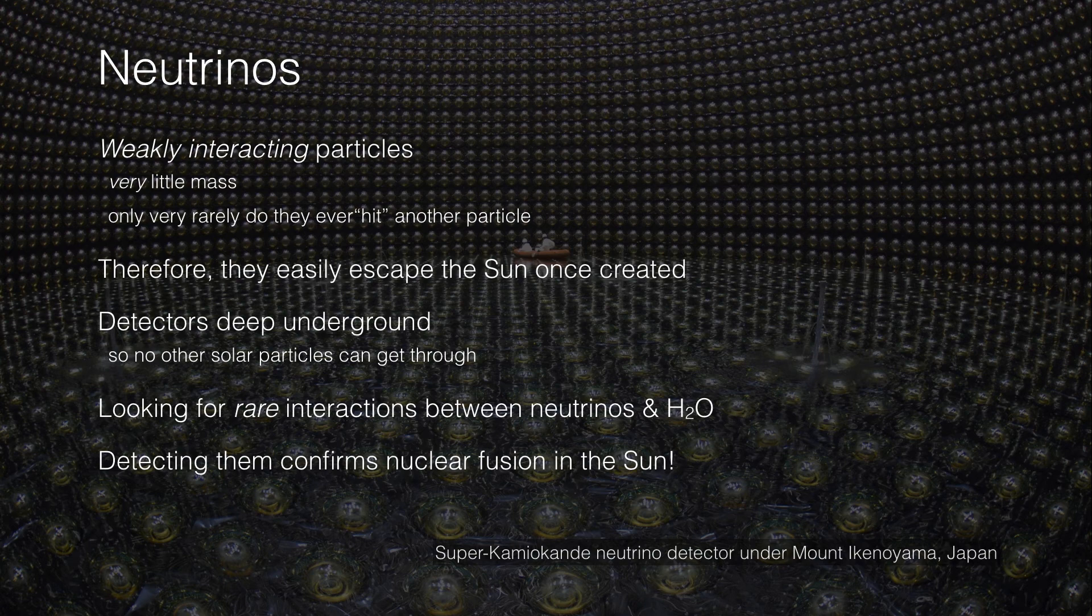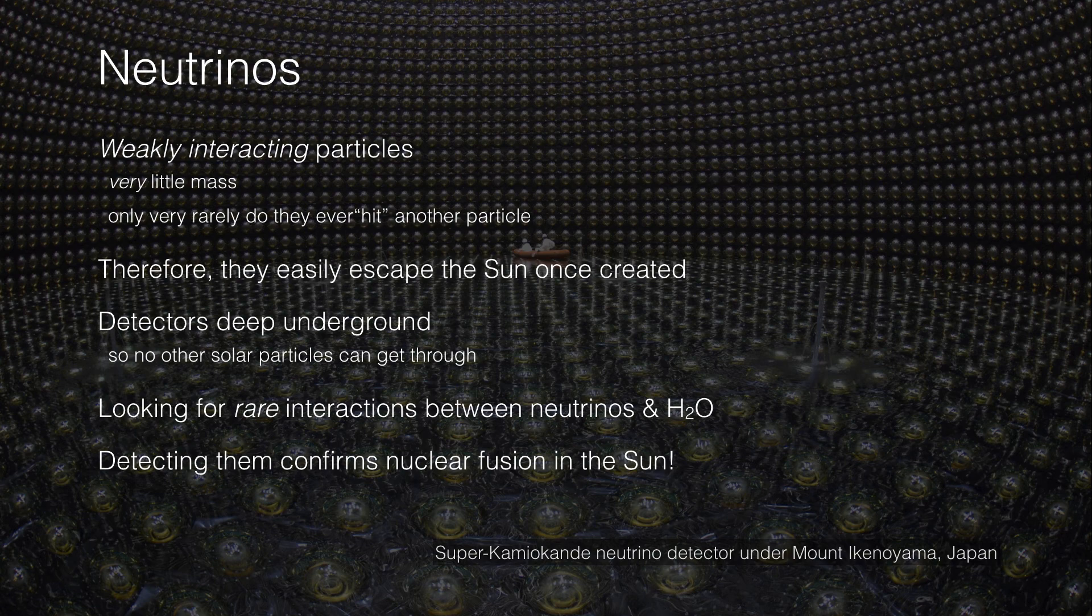This is how we know our understanding of the sun's energy production is correct. The proton-proton chain predicts neutrinos and we detect these neutrinos, albeit rarely.